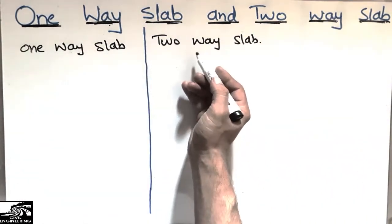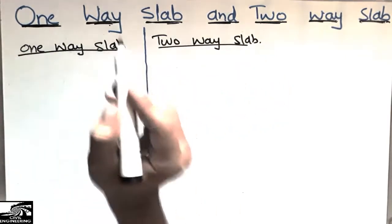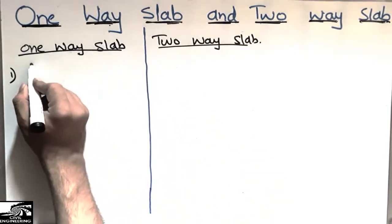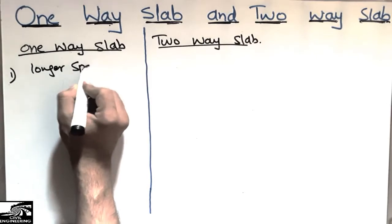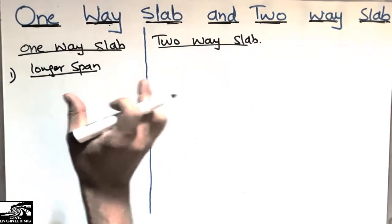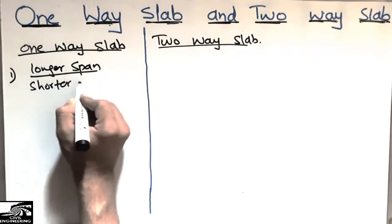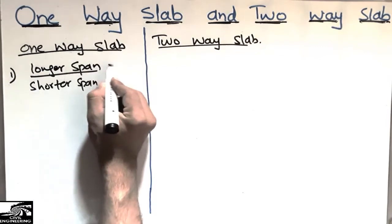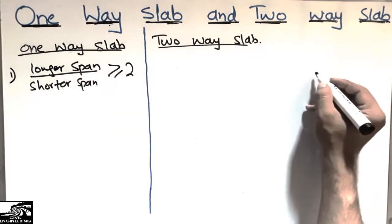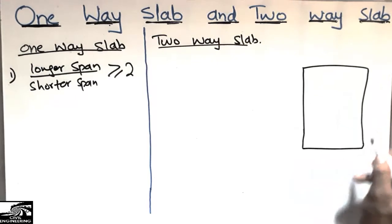The first and main difference between these two slabs is the ratio of the longer span to the shorter span. In the case of the one-way slab, this ratio should always be greater than or equal to 2. For example, taking any slab — this is a slab.